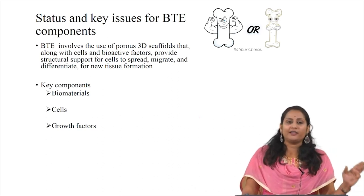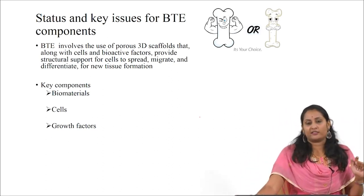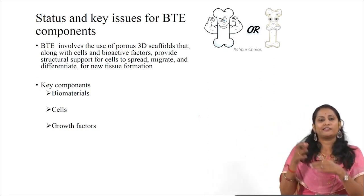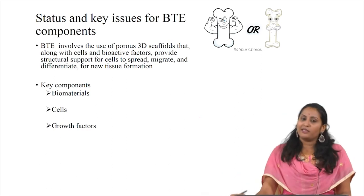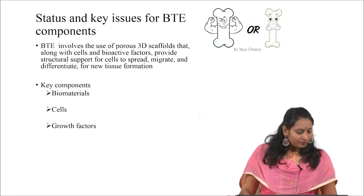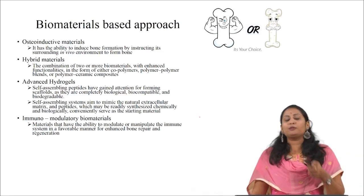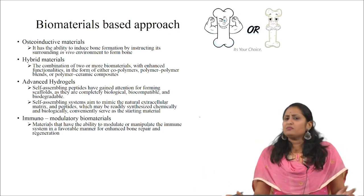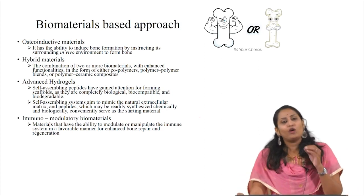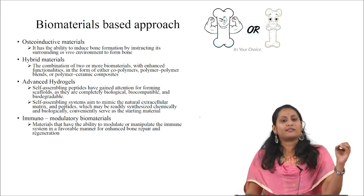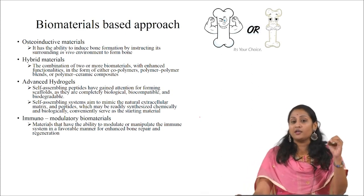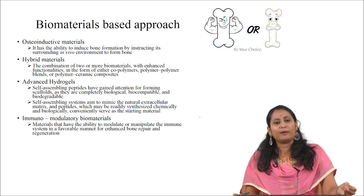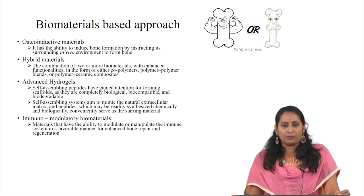The three components are biomaterials, cells and growth factors. We will be seeing the strategies for biomaterials, cell-based approaches, and growth factor-based approaches in the later presentation. To start with the biomaterials-based approach, we should know what a biomaterial is. A biomaterial is a natural or a synthetic substance that has been engineered to perform a biological function with a medical purpose — it can be either therapeutic or diagnostic.